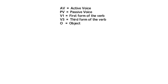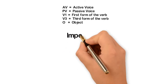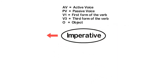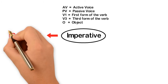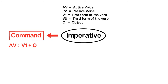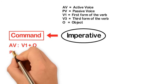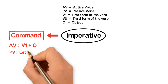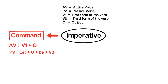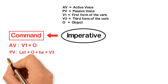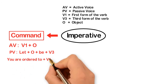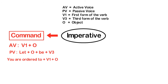Now let's learn how to convert an imperative sentence to passive. For imperative sentences expressing order or command, the structure of active voice is: First form of the verb + object. Converting it to passive, the structure becomes: 'Let' + object + 'be' + third form of the verb (past participle). You can also use this structure: 'You are ordered to' + first form of the verb + object.